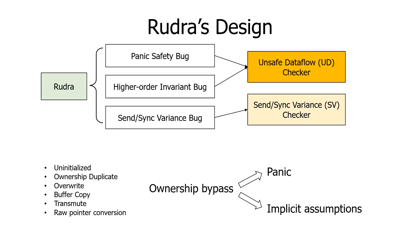The unsafe data flow checker models six types of ownership bypasses. Then it uses a coarse-grained data flow analysis to detect panic safety bugs and higher-order invariant bugs. It finds a data flow from an ownership bypass to panic locations to detect panic safety bugs, and it finds a data flow from an ownership bypass to the location where implicit assumptions are made to detect higher-order invariant bugs.